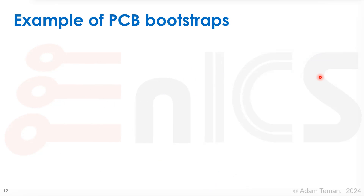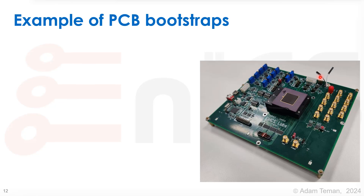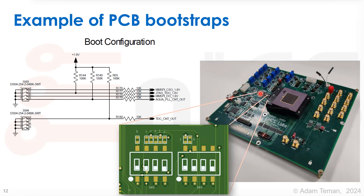Let's see what these PCB bootstraps look like on a real board. This is the Sansa board, used for the Sansa chip, Bianca, and Lupulus. If we look at these two little black things here, they're switches — pairs of four switches. We can see their electrical schematic: SW3 and SW4, pairs of four switches. These are pull-down switches. When we close the switch, it connects to ground, causing this line to be pulled down to zero, which goes to the actual chip.